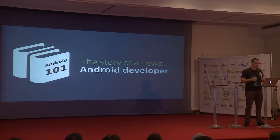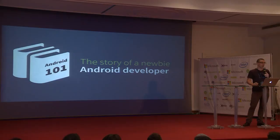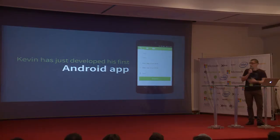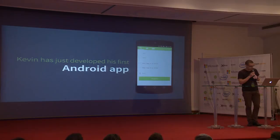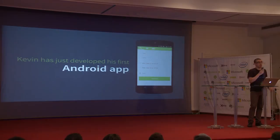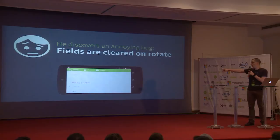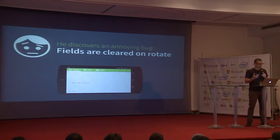Kevin is a great developer, but he's not an Android developer. He started developing his first Android app. Before publishing it, Kevin decided to start testing it, and while testing he discovered that when rotating the device, the fields are cleared — basically the UI state, the information that the user has given, has been lost.